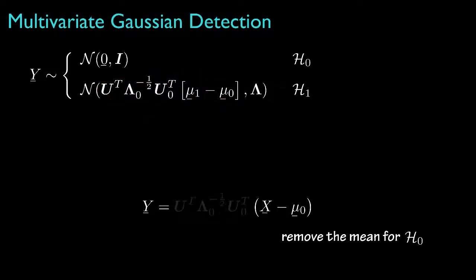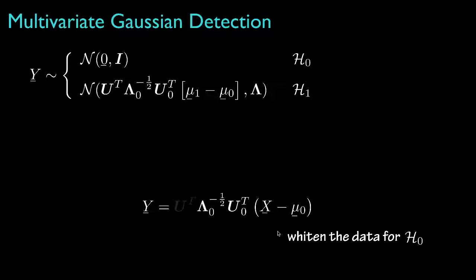In summary, the preprocessing steps are: first, remove the mean for hypothesis 0; then decorrelate the data for hypothesis 0 by multiplying with the matrix of eigenvectors for the original covariance for hypothesis 0; then whiten the data for hypothesis 0 by scaling by the square root of the eigenvalues for the covariance for hypothesis 0; and finally use the eigenvectors for the modified covariance matrix for hypothesis 1 to decorrelate the data for hypothesis 1. Because the data for hypothesis 0 already had a mean of 0 and an identity covariance matrix, this orthonormal transformation will not change either of those.